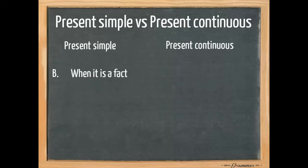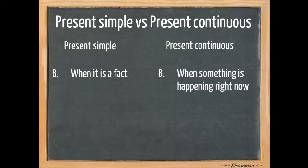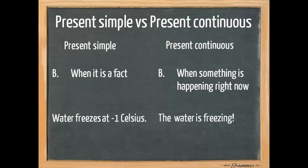The present simple is also used when talking about facts. The present continuous is used when something is happening right now. An example of the present simple here is water freezes at minus one Celsius. An example of the present continuous is the water is freezing, look.